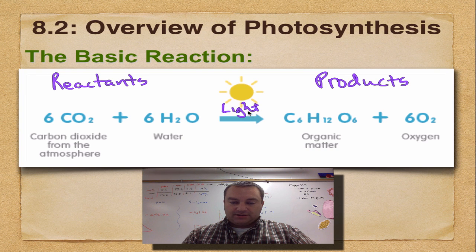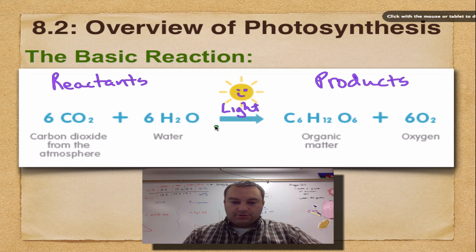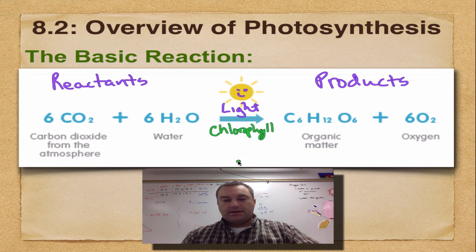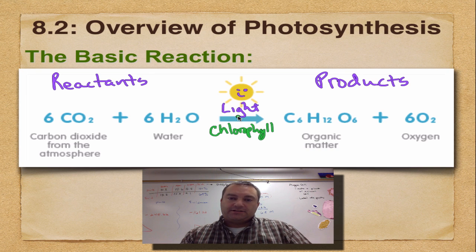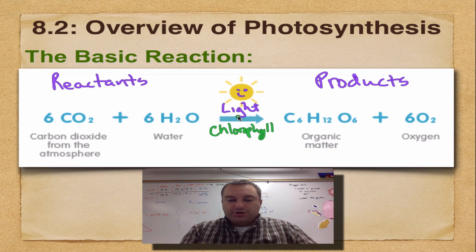Lots of times you see light written above the arrow, but on this graphic we have the sun. Now the light is going to be captured by a molecule called chlorophyll. So often you're going to see the word chlorophyll written underneath the arrow. With the help of chlorophyll capturing the light, this light's going to grab the carbon dioxide and the water and kind of bang them together.